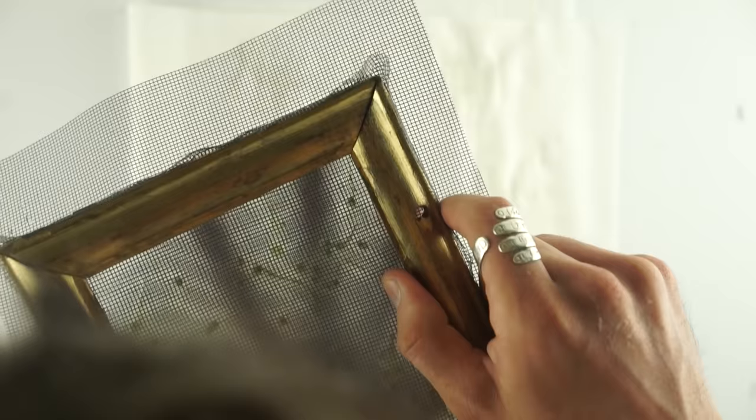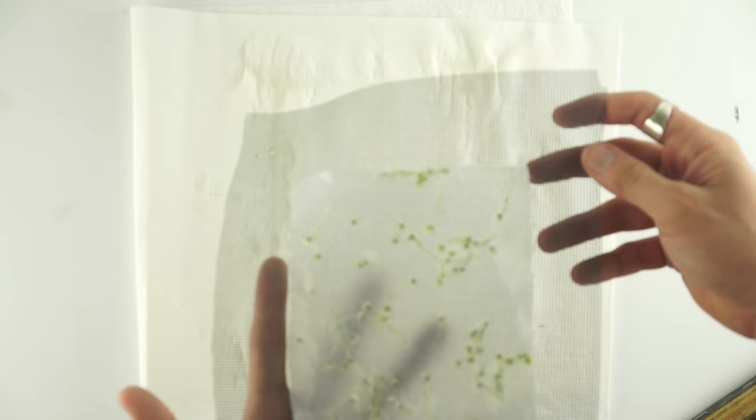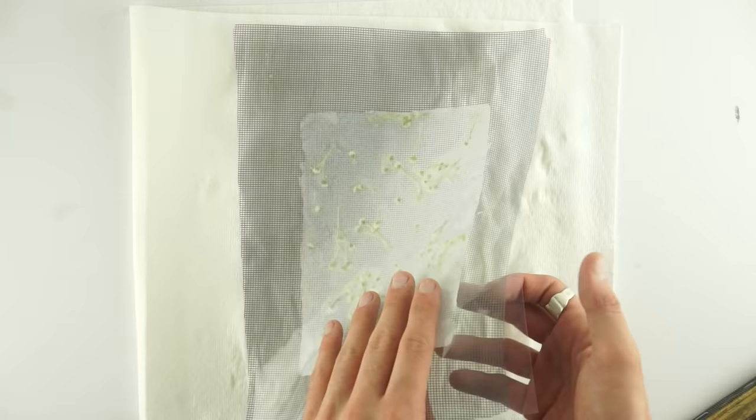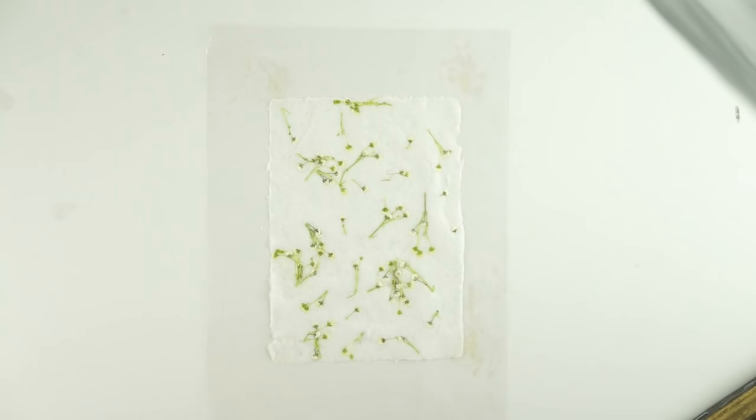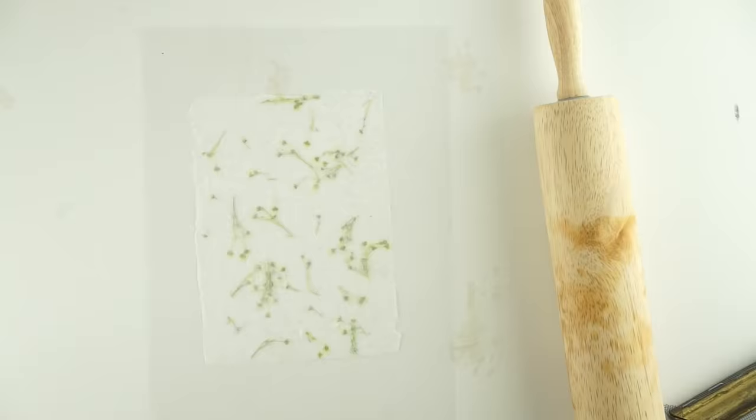That way you can put the plastic sheet right on top, and then turn it over, and then remove your screen, and then flatten it and get some of that water out.